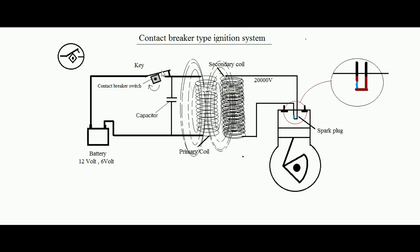For example: when the switch is made on, suppose the voltage developed in the secondary coil is 10,000 volts. But when it is made open, due to the job of the capacitor, the voltage could be 20,000 volts. This is an example only.